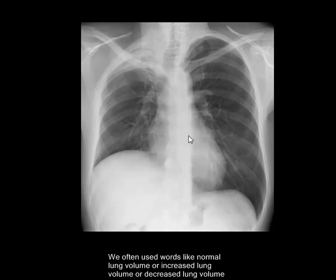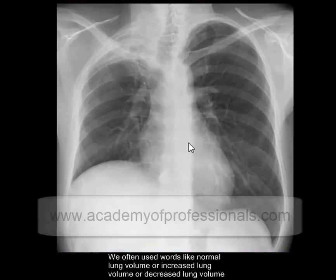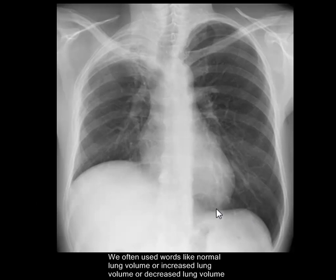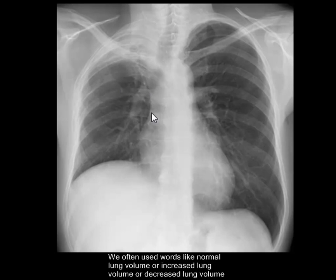Hello friends, once again another chest X-ray is in front of you. The right lung is significantly smaller than the left lung. The right hemidiaphragm is raised up, the right apex is opaque. This is probably the right horizontal fissure, which should be horizontal — it has been pulled up. The right hilum is also pulled up. This is the pulmonary artery — the right pulmonary artery.